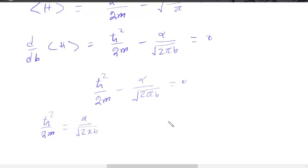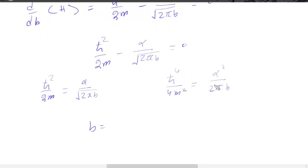We square both sides to find the value of b. Squaring gives H cut square divided by 2m squared equals alpha squared divided by (2πb). Solving for b, the value of b is equal to m²α² divided by (π ℏ⁴). This is the value of b.